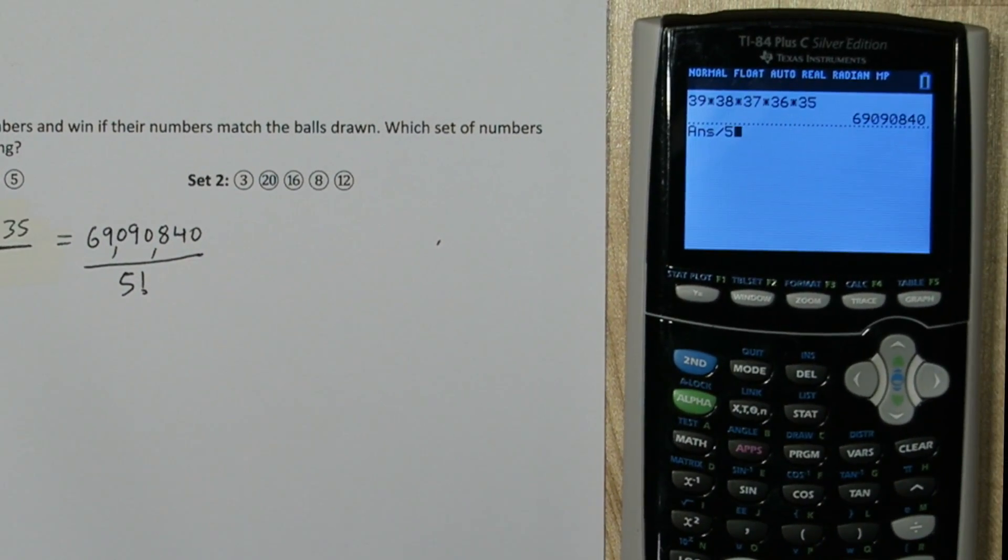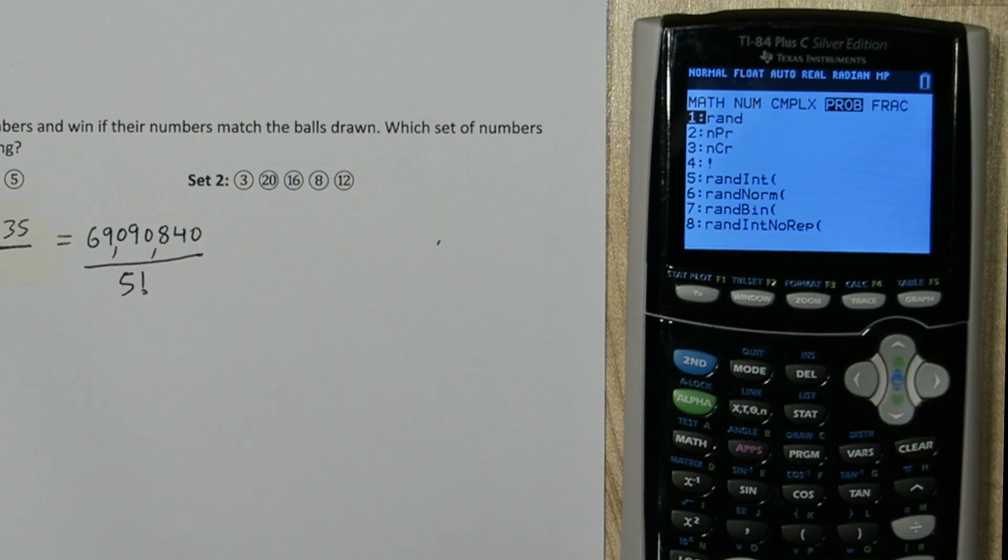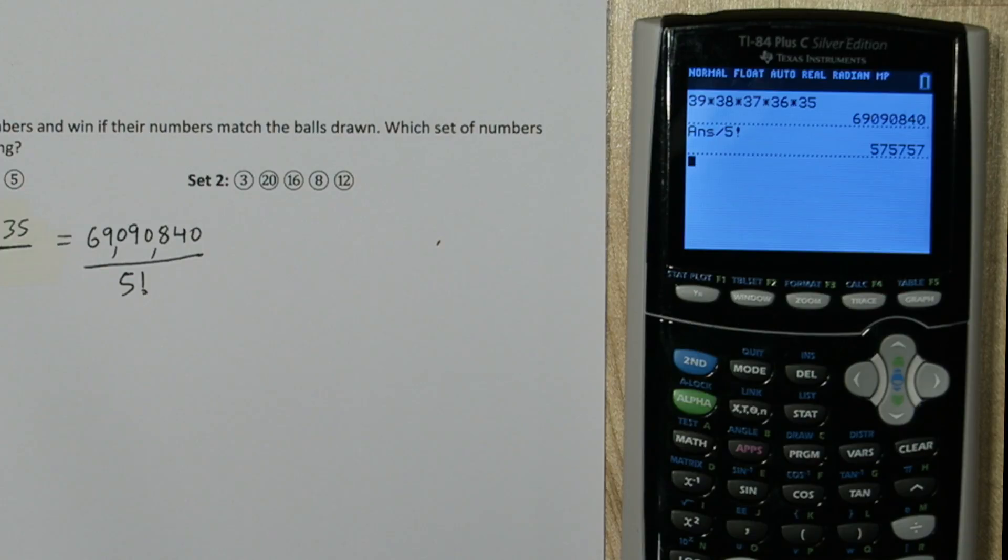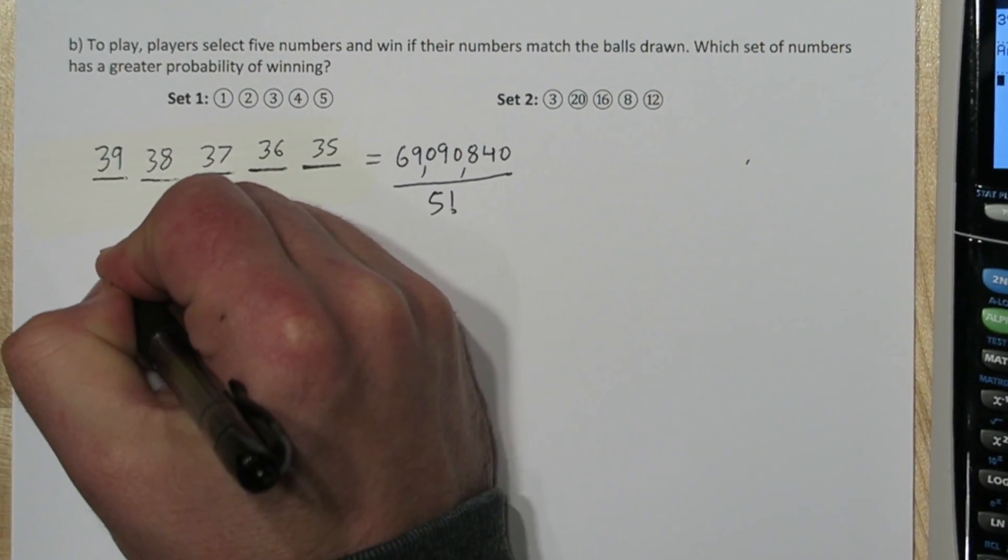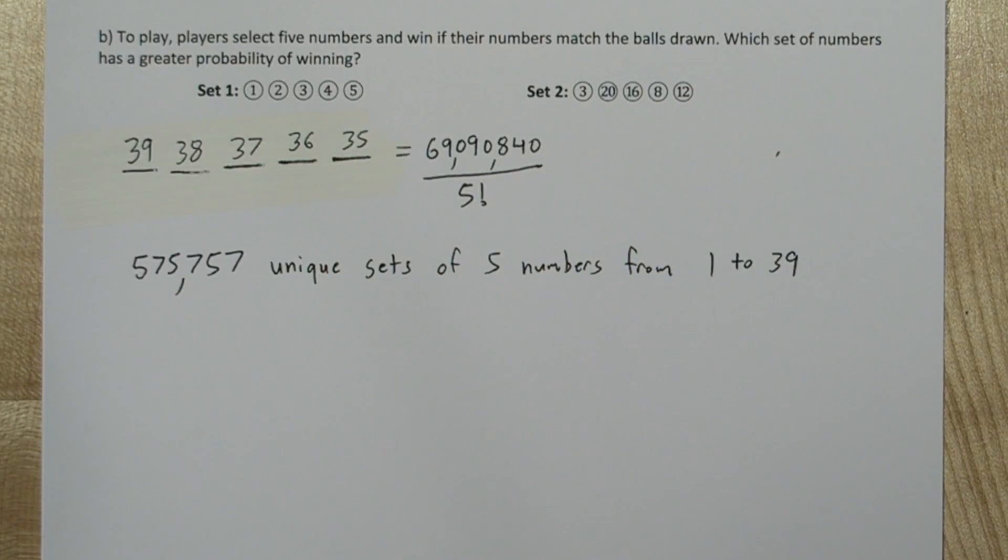If you ever need to use the factorial button on your calculator, press math, and go over to probability, and it's the fourth option. So it turns out there's 575,757 unique sets of 5 numbers from 1 to 39.